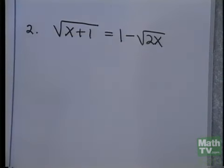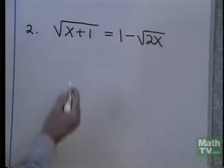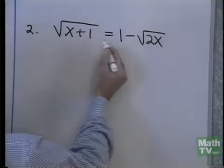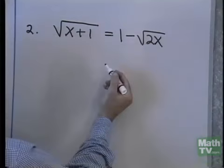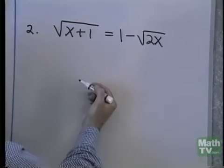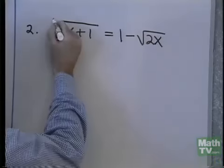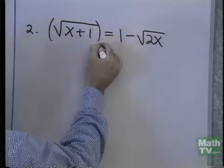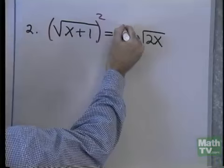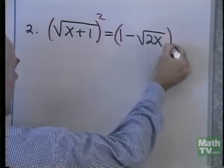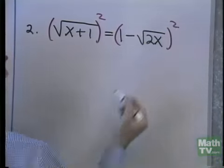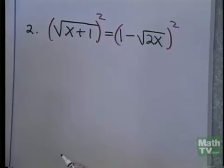Let's look at another one of these problems. Square root of x plus 1 equals 1 minus square root of 2x. Same problem here — I have these square roots, and that's what keeps me from solving this by normal methods. So I'm going to square both sides of this equation and see if I can get rid of these square roots.